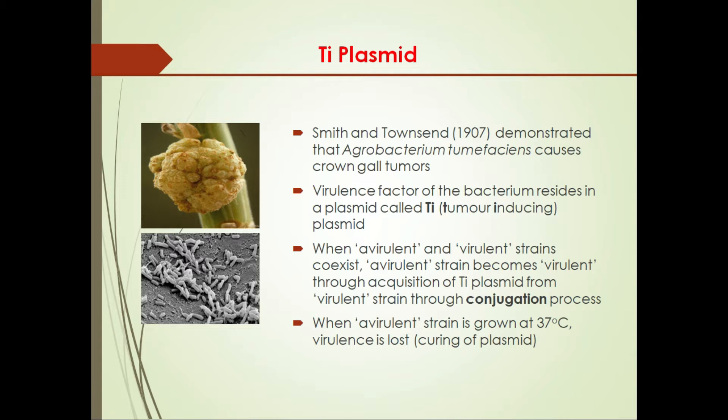In the previous class we learned the types of plasmids: conjugative, non-conjugative, and mobilizable. So the Ti plasmid is a conjugative plasmid — it promotes conjugation. This Ti plasmid can be transferred to an avirulent strain, which becomes virulent when it acquires the Ti plasmid.